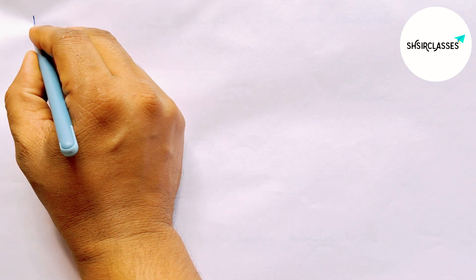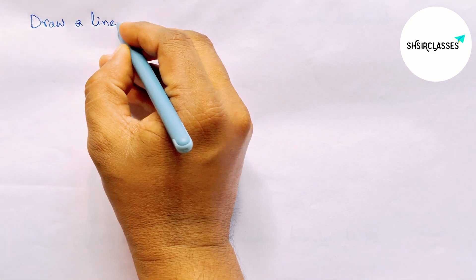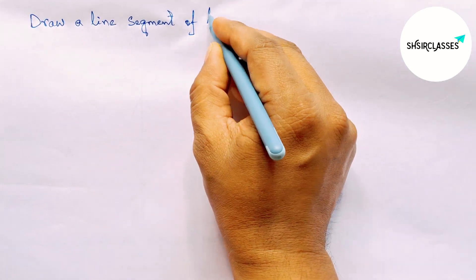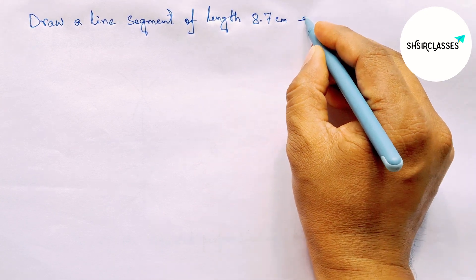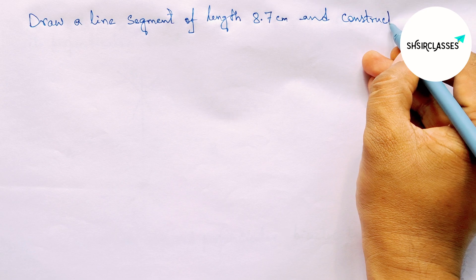Hi everyone, welcome to Siser classes. Today in this video, we'll draw a line segment of length 8.7 cm and construct its perpendicular bisector to the given line in an easy way.